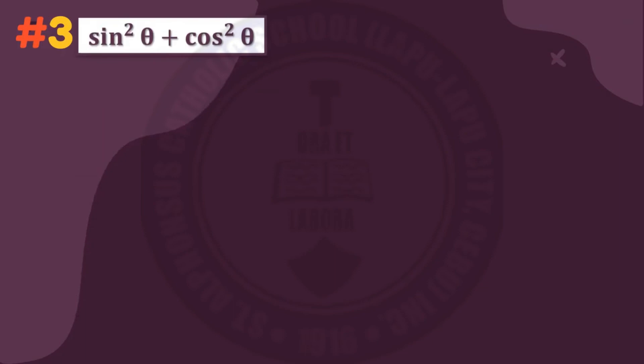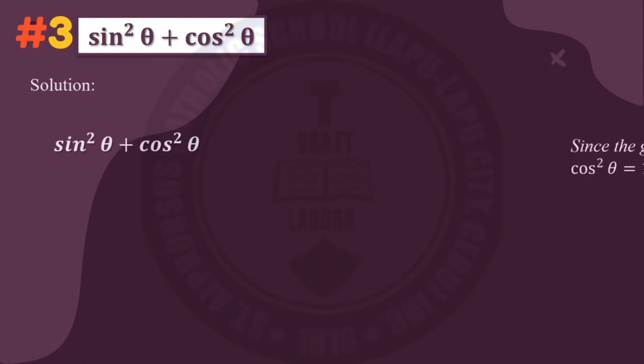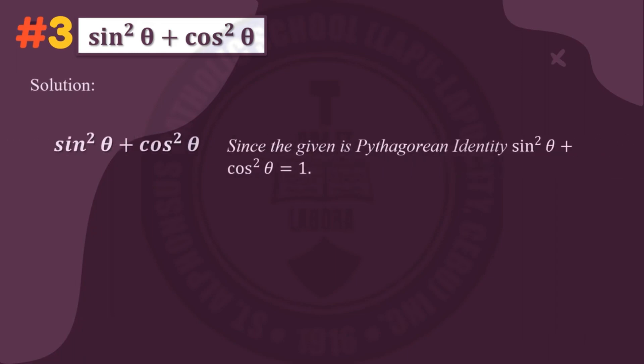Number three: sine squared theta plus cosine squared theta. For our solution, we copy the given, and since the given is a Pythagorean identity — sine squared theta plus cosine squared theta equals one — the answer is one.